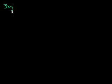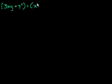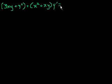So let's say we have an equation that has this form. This is my differential equation: 3xy plus y squared, plus x squared plus xy times y prime, is equal to 0.